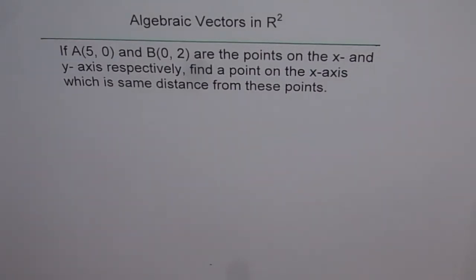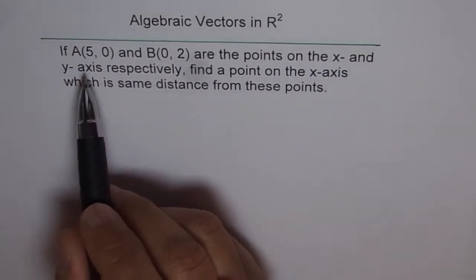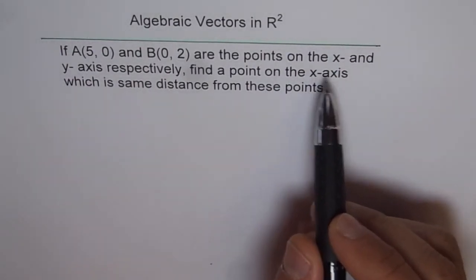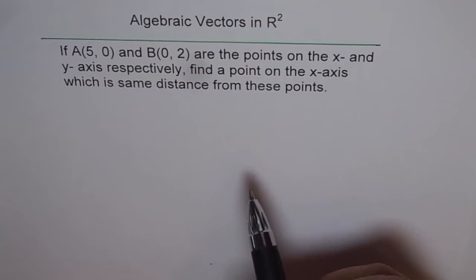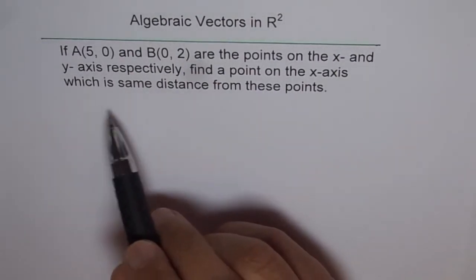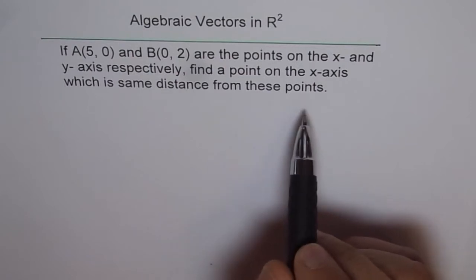Algebraic vectors in R². If A(5,0) and B(0,2) are the points on X and Y axis respectively, find a point on X axis which is same distance from these points.